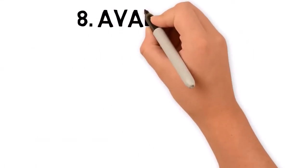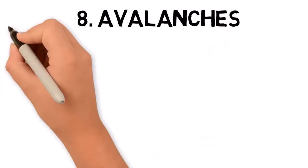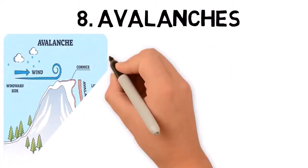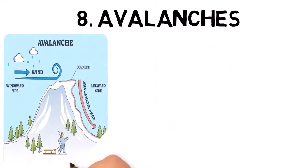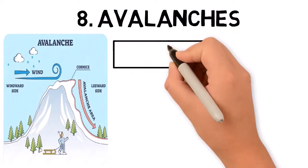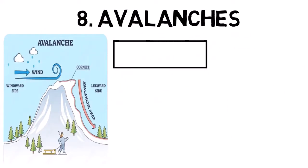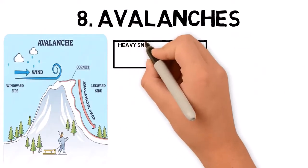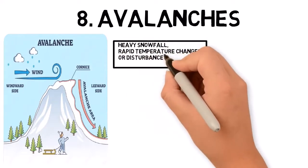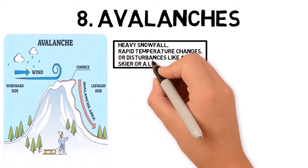Avalanches are a type of landslide that involves the rapid flow of snow down a mountainside. They are often triggered by factors such as heavy snowfall, rapid temperature changes, or disturbances like a skier or a loud noise.